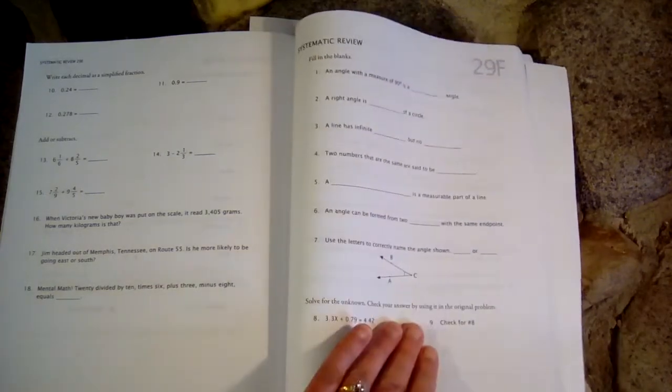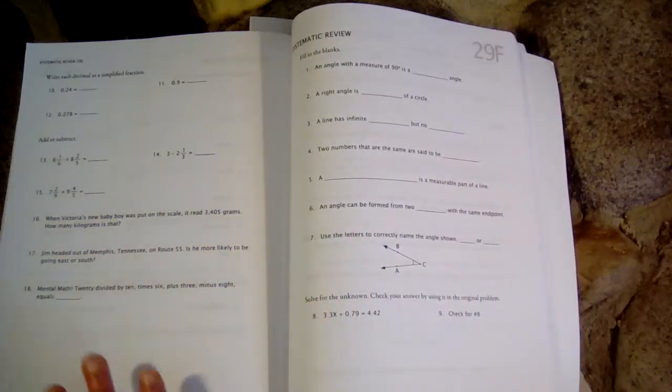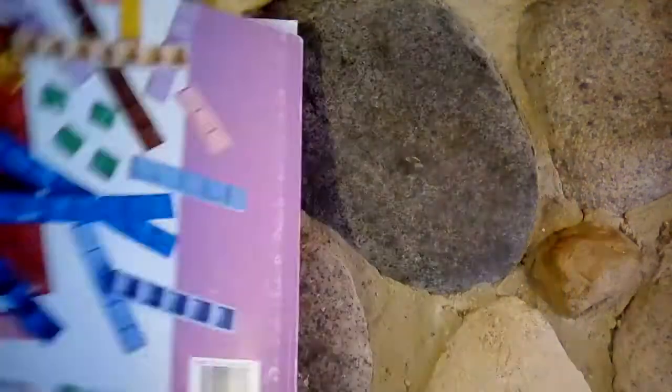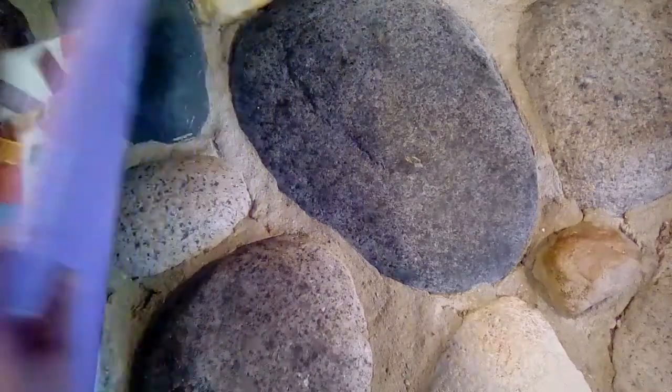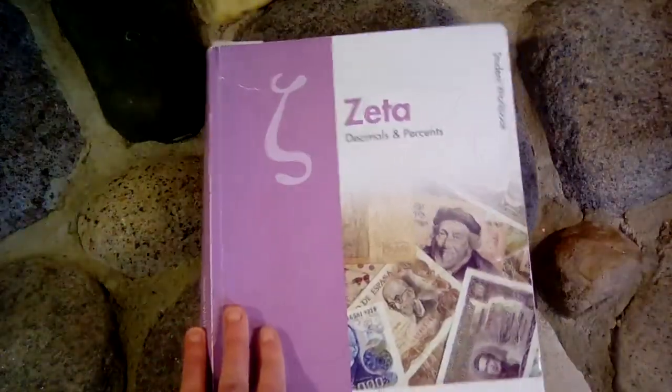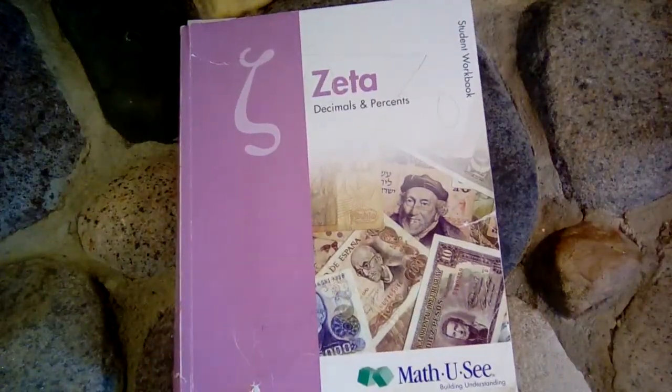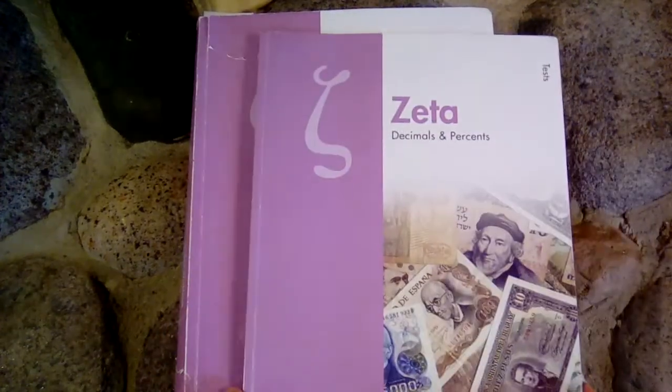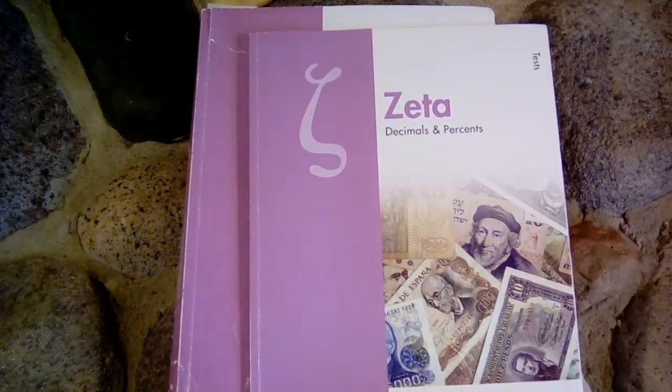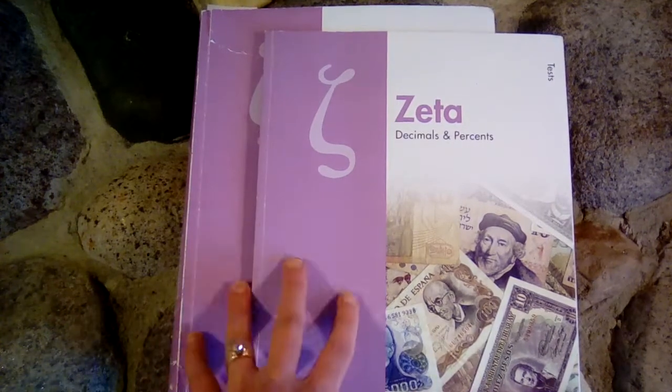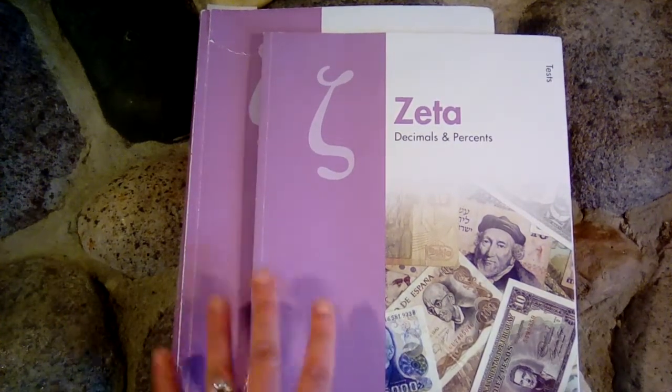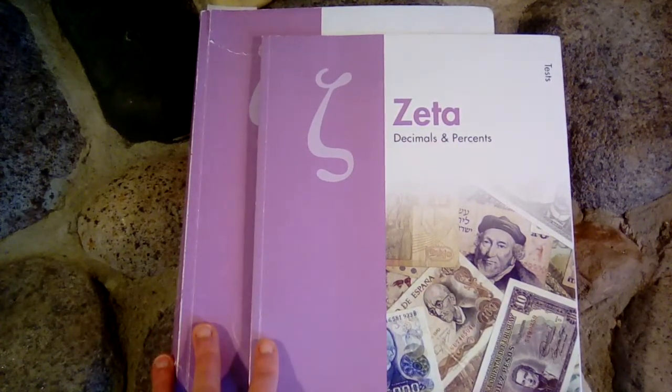I would also say that when comparing the three programs, so Math-U-See, Saxon, and teaching textbooks, I would say Saxon is the most rigorous and covers the most concepts. And then teaching textbooks is somewhere in the middle. It covers more concepts than this, but it is not as rigorous as Saxon.